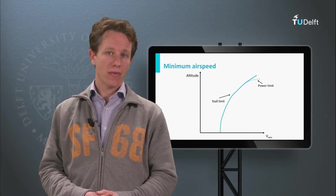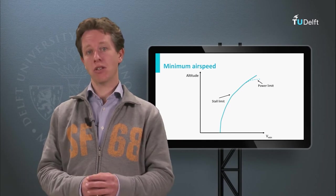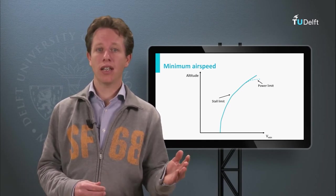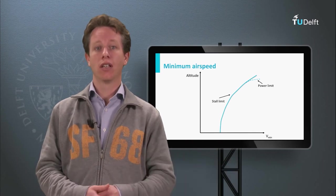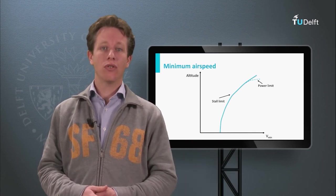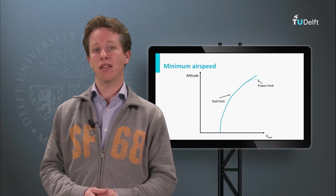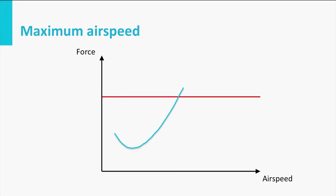Great! If we now do the same exercise for the maximum airspeed, we see how the aircraft behaves on the other side of the spectrum. Again, we can use the performance diagram to investigate this. As you probably remember, the maximum airspeed is determined by the intersection of the drag curve and the maximum thrust curve.